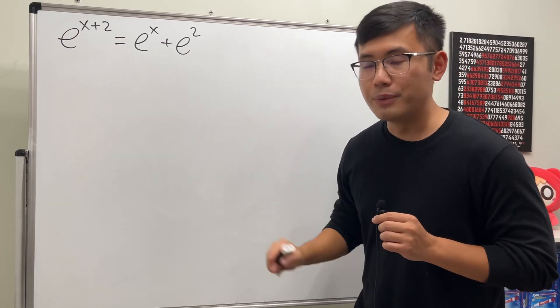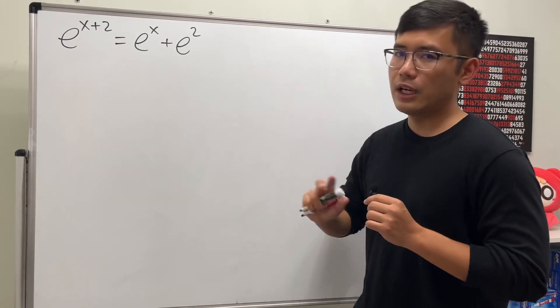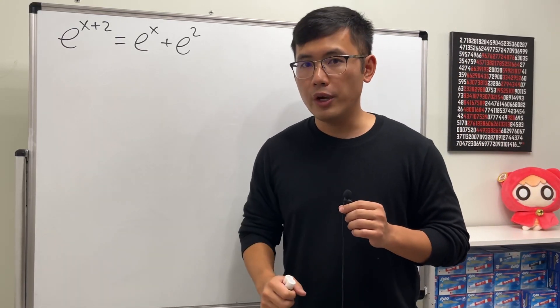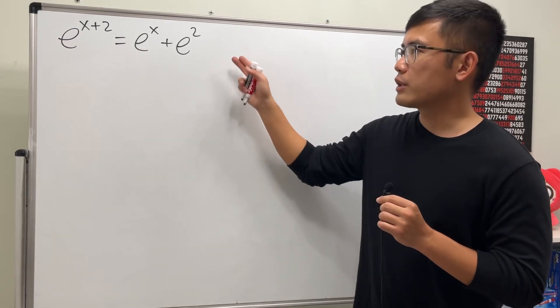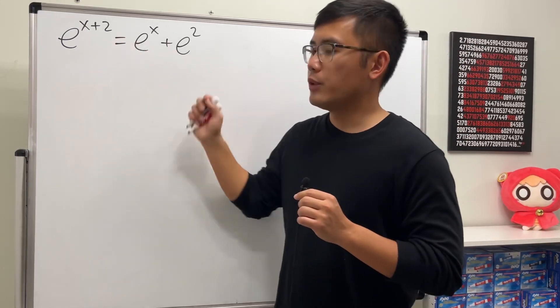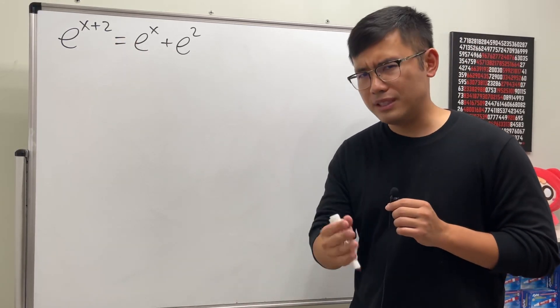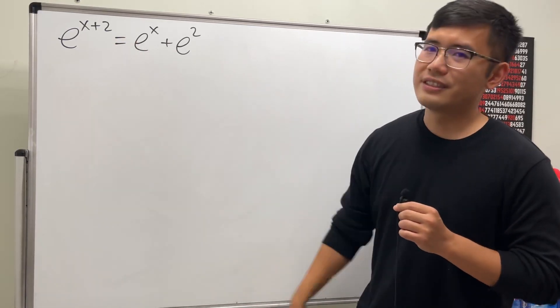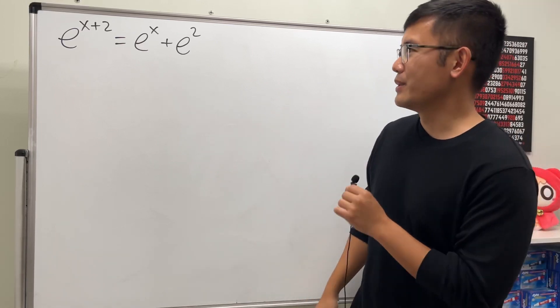Of course, this is not always true because this is not an identity, it's not a rule. But we can look at this as an exponential equation, meaning we can actually solve for an x that makes this equation true. You know the deal: please pause the video and try this first. Done? Okay, let's see how we can do this.